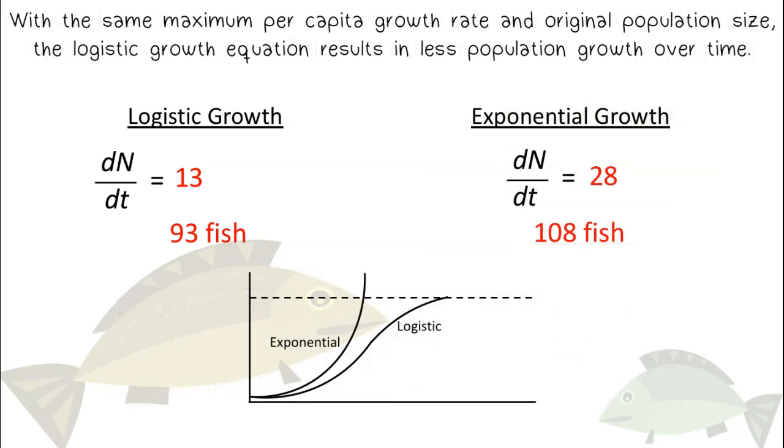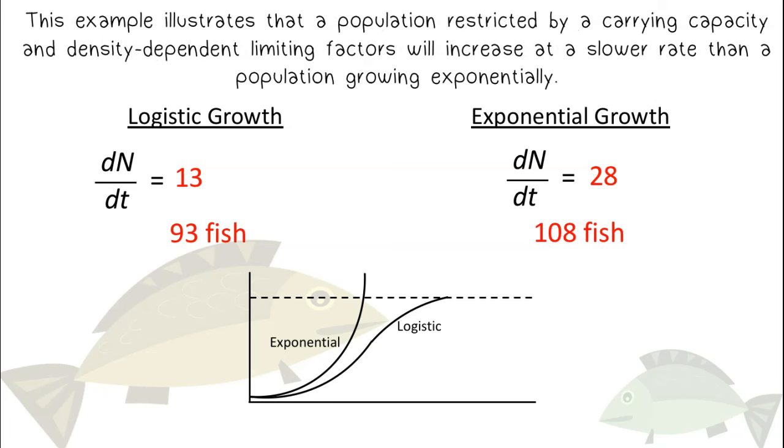With the same maximum per capita growth rate and original population size, the logistic growth equation results in less population growth over time. This example illustrates that a population restricted by a carrying capacity and density dependent limiting factors will increase at a slower rate than a population growing exponentially.